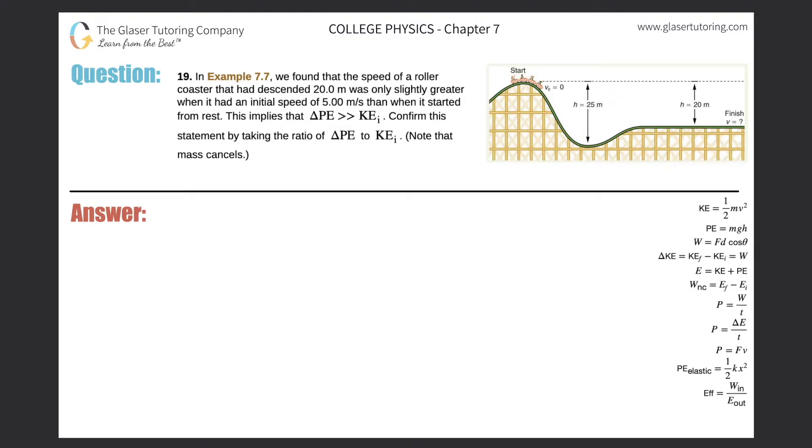Number 19. In example 7.7, we found that the speed of a roller coaster that had descended 20 meters was only slightly greater when it had an initial speed of 5 meters per second than when it started from rest.